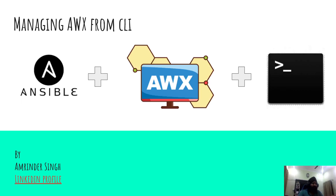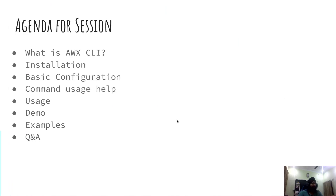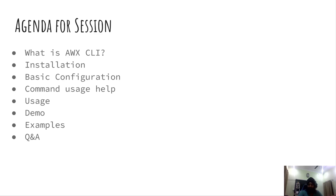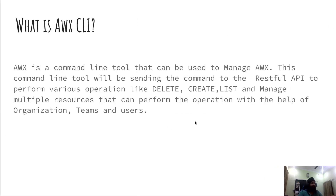Hi guys, I'm Amrinder Singh and today we are here to talk about one command line tool called AWX, which is used to manage the resources for AWX. AWX is an open source automation tool which uses Ansible in the background. In today's session we will be covering what exactly the AWX command line tool is, how to do the installation, what is the basic configuration, how to get command help, and a few usage commands and a demo.